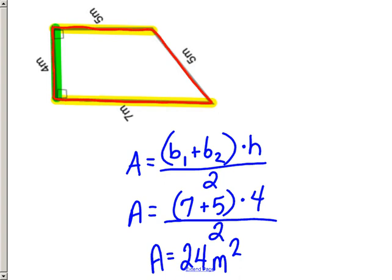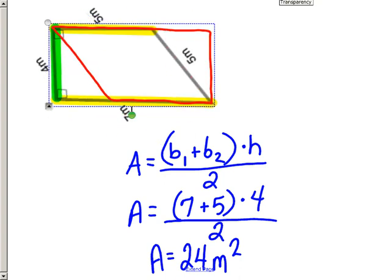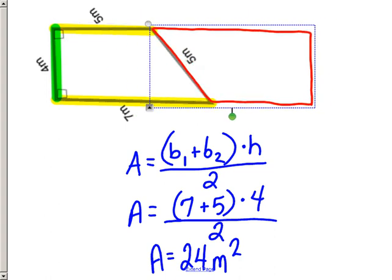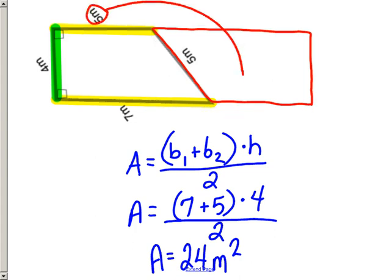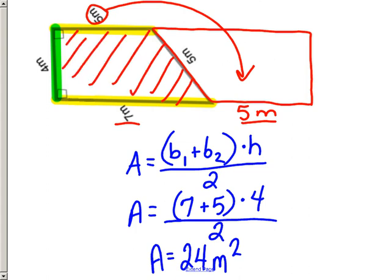Again, if you make a congruent copy and rotate it 180 degrees, it makes a parallelogram — technically a rectangle here. The base of that rectangle would be 5 + 7 = 12 meters, and 12 × 4 = 48. Dividing by 2 gives 24 square meters — the area of just one trapezoid.